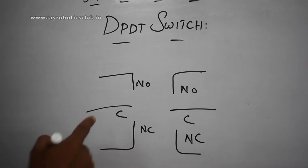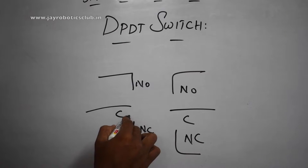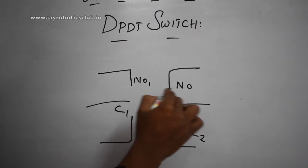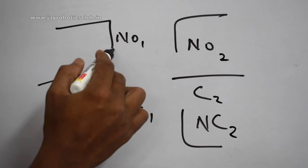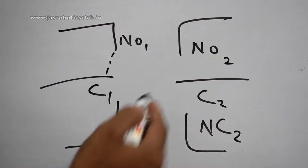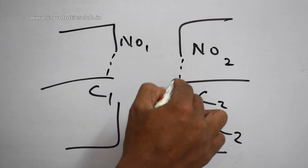Now when you switch on both of this, I'll say it as C1, C2, NC1, NC2, NO1, NO2. Both of this C1 and C2 will come in contact with NO1, and the C2 will come in contact with NO2 while you switch on.